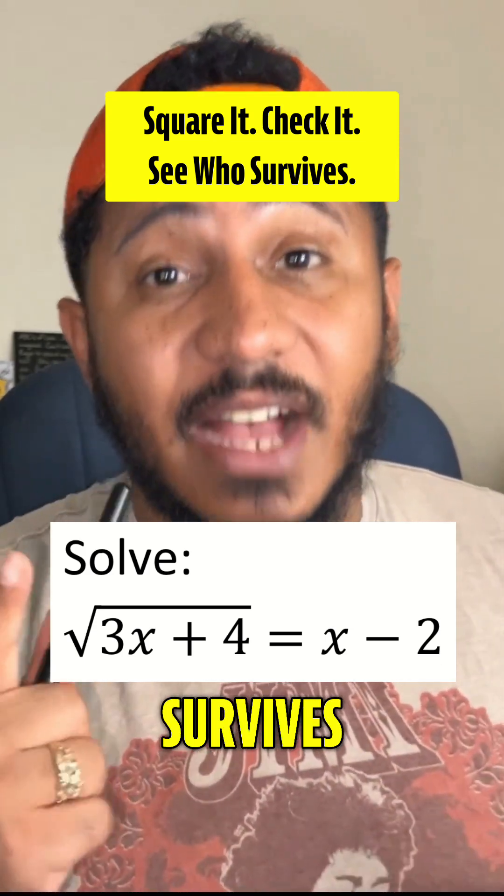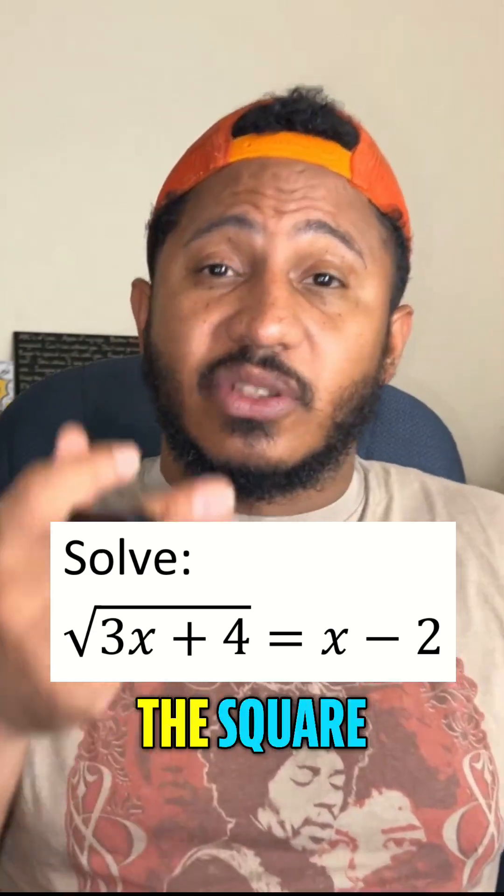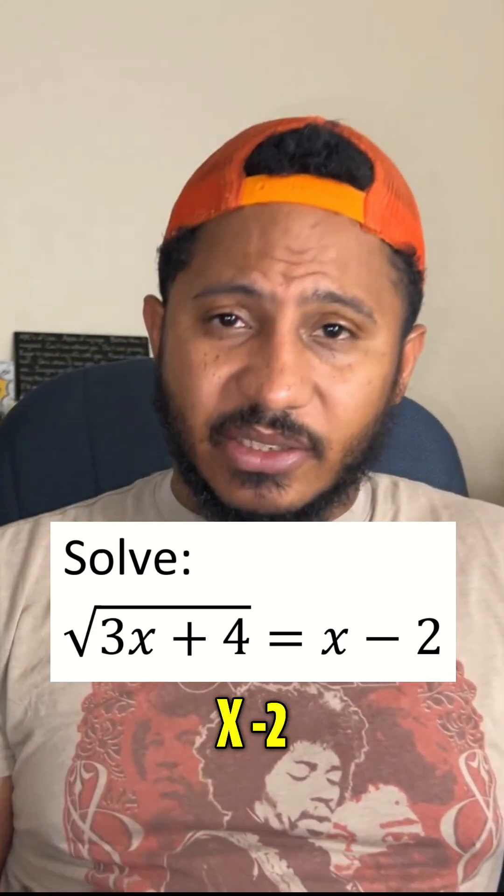We'll square it and see which candidate survives. It's the Math Guy, Steve. Solve, because we've got the square root of 3x plus 4 equals x minus 2.